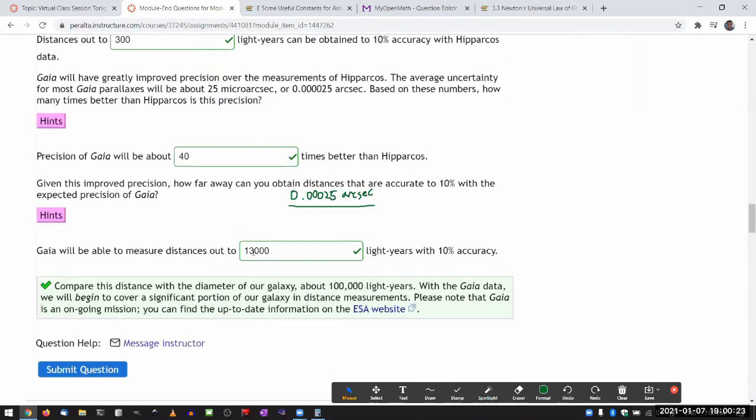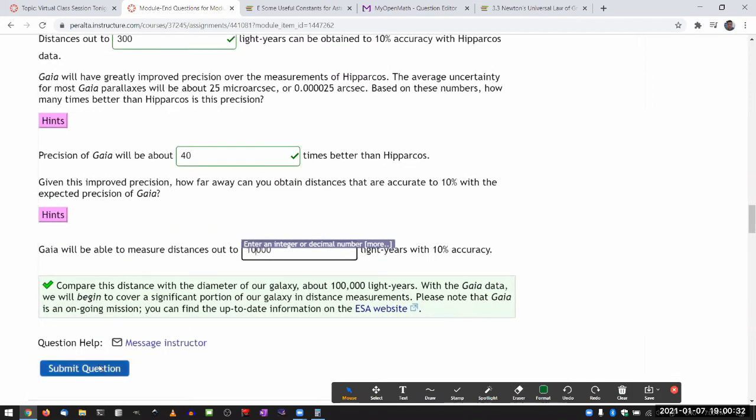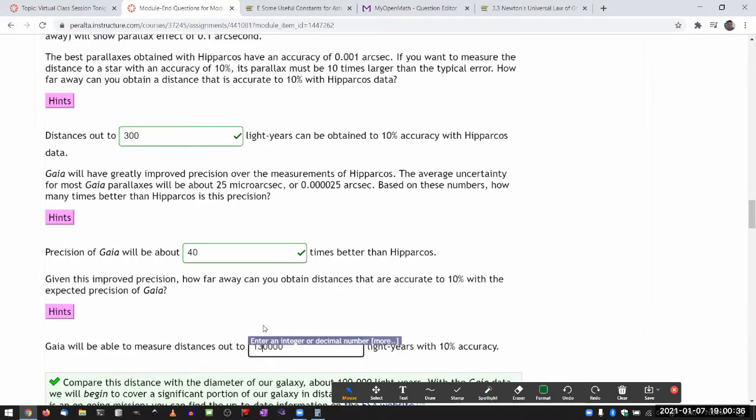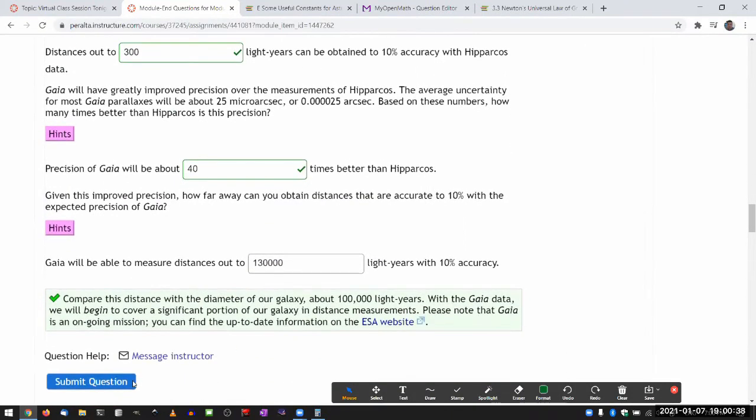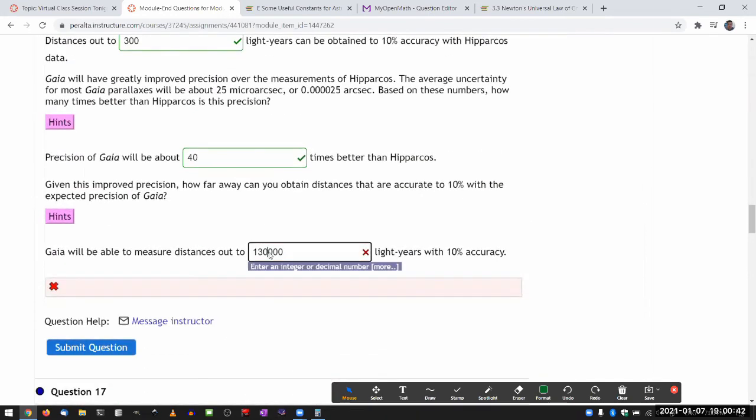And here again, it's coded with enough of a tolerance that if you're using slightly different numbers, it'll still grade that as correct. But as you saw, if you are way off, like a factor of 10 off, then you won't say it's correct.